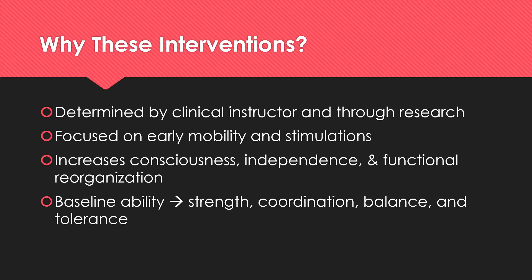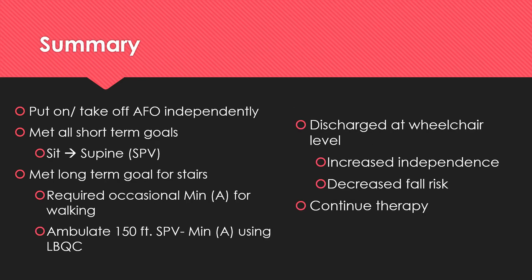Interventions began at baseline ability and were progressed as the patient was able to increase strength, coordination, balance, and tolerance. The patient progressed from an overall FIM level of maximum assistance to a level of minimal assistance or supervision for functional mobility and gait. He gradually met all of his short-term goals over the course of treatment. He was able to meet his long-term goal for stairs but required occasional minimal assistance for walking. He was able to put on and off his ankle foot orthosis independently. He completed supine to and from sitting at a moderate assistance level, and demonstrated safe transition from sitting to and from standing at a supervision level. He was able to ambulate 150 feet with supervision to minimal assistance using a large base quad cane, and ambulate 18 steps with minimal assistance by discharge. The patient also displayed improvements with strength, coordination, activity tolerance, cognition, and endurance.